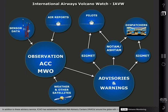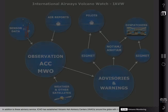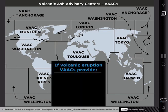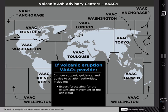In addition to these advisory services, ICAO has established volcanic ash advisory centers around the globe with designated areas of responsibility. In the event of a volcanic eruption, these centers provide 24-hour support, guidance, and advice to aviation authorities, including expert forecasting for the extent and movement of the ash cloud, and continuous monitoring via meteorological satellites.